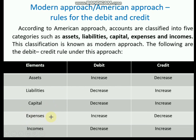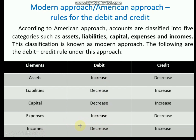In the case of expenses, when expenses are increased, they are debited. When an expense is decreased, it is credited. Assets and expenses have the same rules with regard to debit and credit. In the case of incomes — which follow the same rule as capital and liabilities — when income is decreased, it is debited; when an income is increased, it is credited.